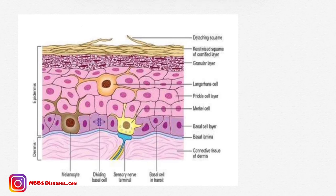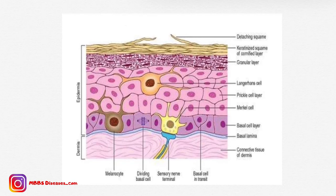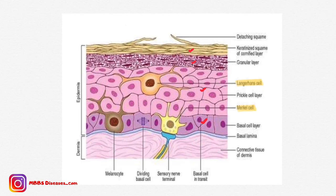Let me show you these cells in this diagram. Keratinocytes are present in all layers — they make up around 90% of the epidermis, so keratin is present everywhere. The other cells visible in the diagram are Langerhans cells, Merkel cells, and melanocytes. This is the melanocyte, this is the Merkel cell, and these are the Langerhans cells.